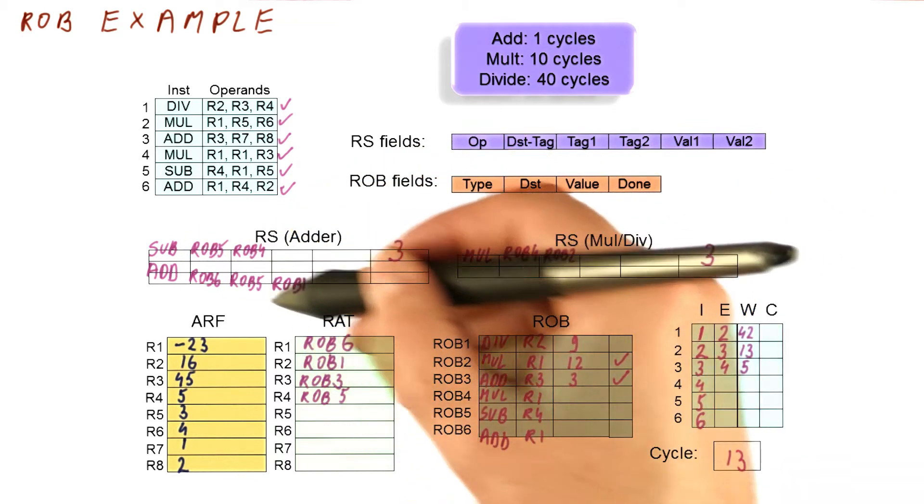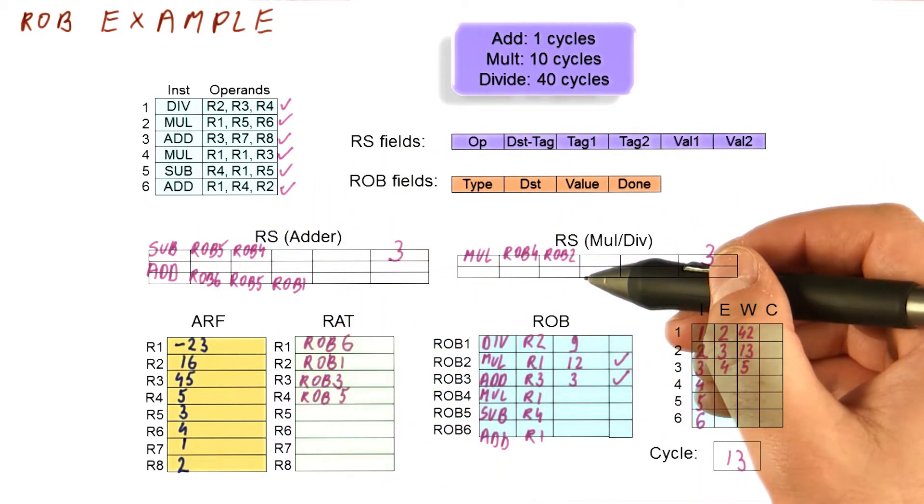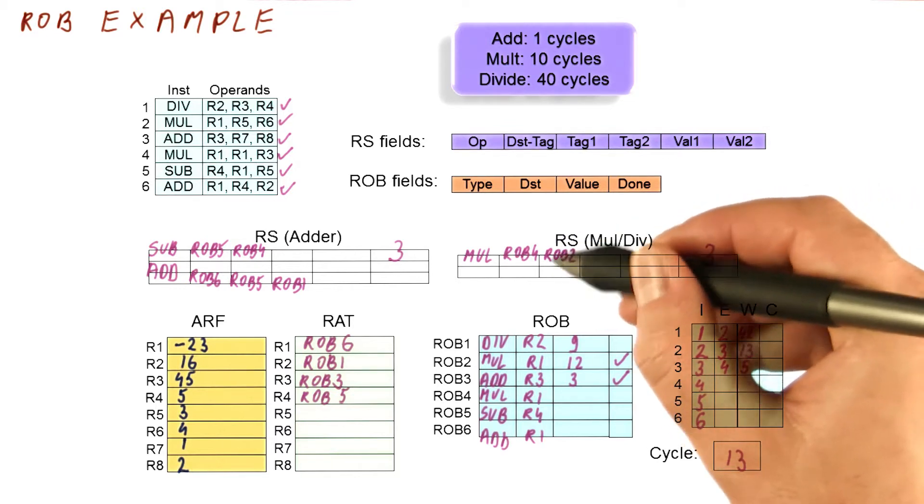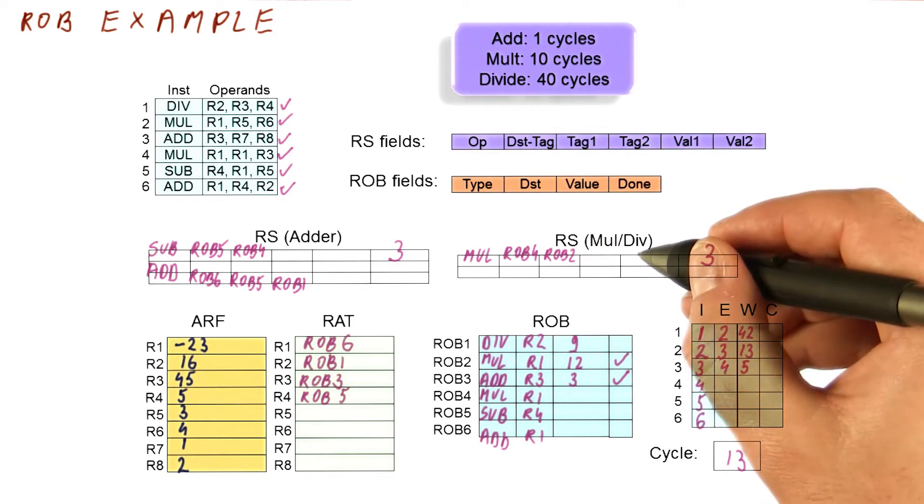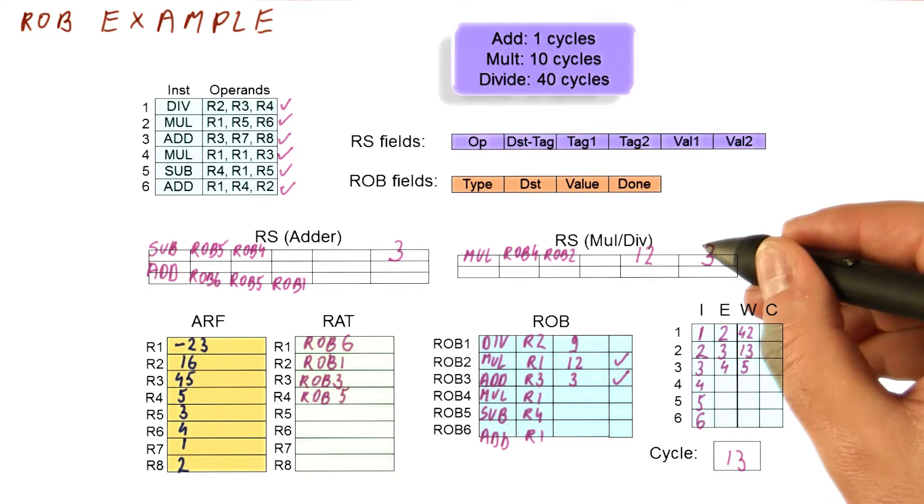And the value of 12 will be broadcast under the name of rob2. So now, these instructions here are waiting for their inputs. And this one here matches that I'm waiting for rob2 value. So it captures it here. This is the first operand that we're waiting for. The second operand was already there since a while ago.